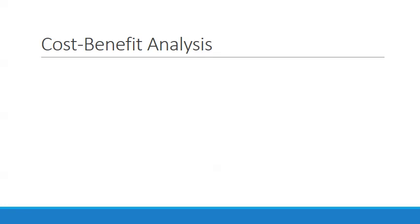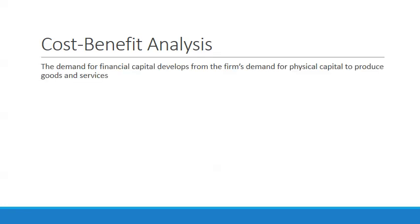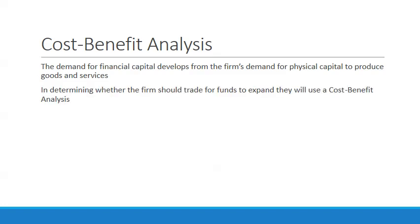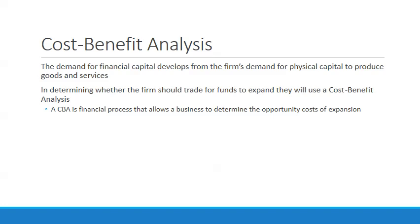A big question is: do you or don't you invest? Randomly deciding to invest doesn't guarantee profit. So firms run a cost-benefit analysis to determine the best options. The demand for financial capital develops from the firm's demand for physical capital to produce goods and services. A CBA is a financial process that allows a business to determine the opportunity cost of expansion and whether an investment is appropriate or even feasible.